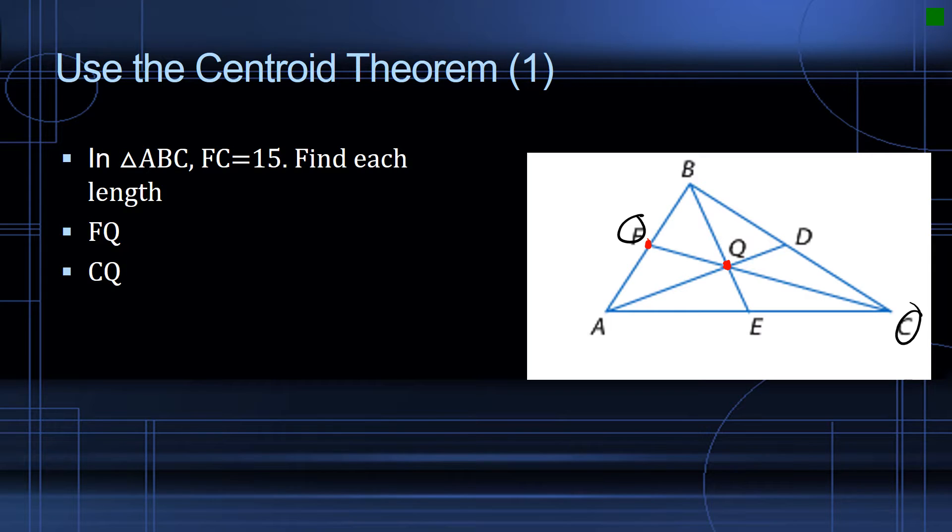What we know about a centroid is that one-third of the length of the total median is between the midpoint to the centroid, and two-thirds is from the centroid to the point of the vertex. So if FC is 15, then FQ is one-third that amount, or 15 over 3, which equals 5.